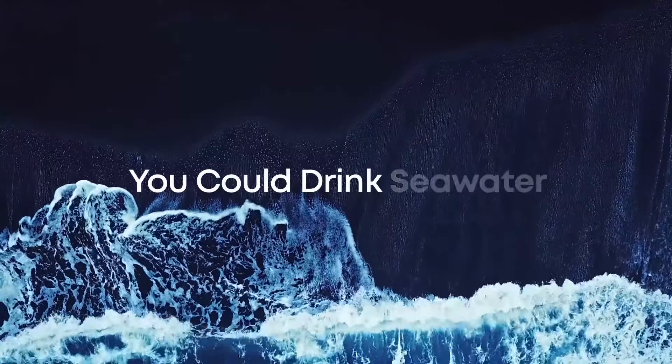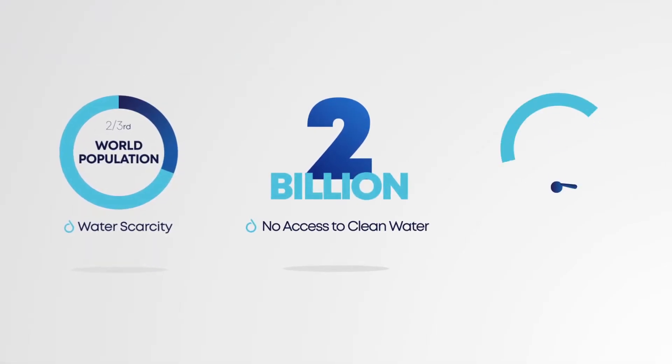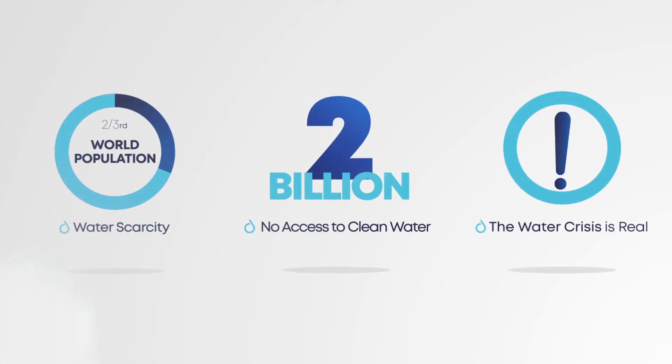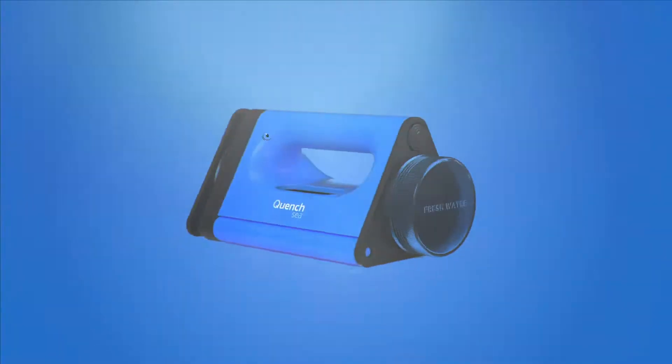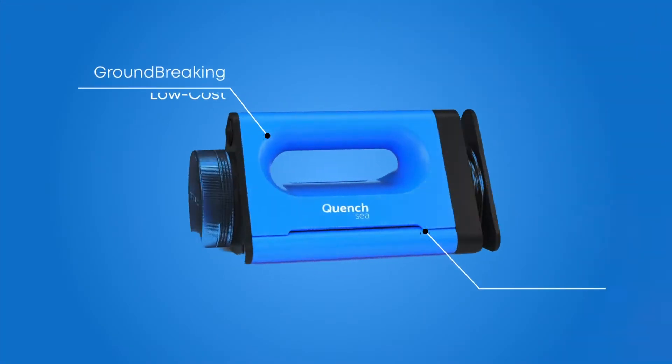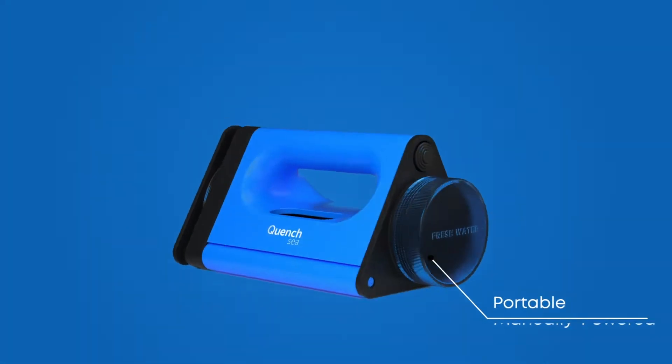Imagine if you could drink seawater. QuenchSea is primarily developed to help make an impact on the lives of people with no access to clean water. We are trying to reach economies of scale to reduce the costs to donate and distribute 100 million QuenchSea units by 2027.